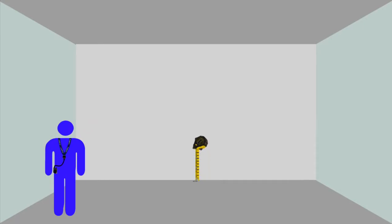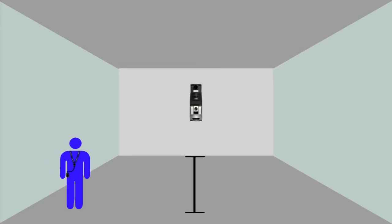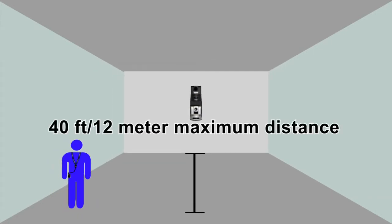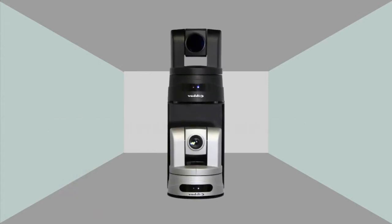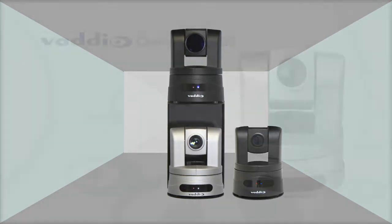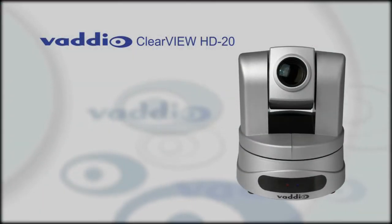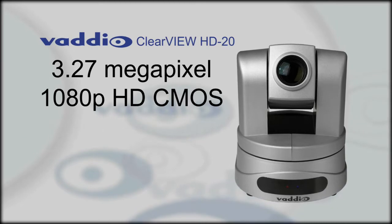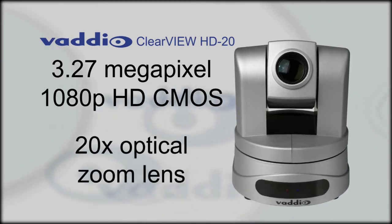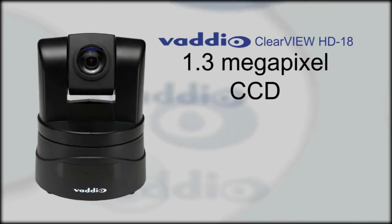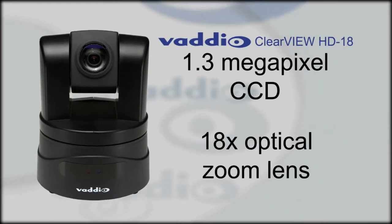Measure and note a location in the center back of the room for the tracking camera to be mounted. The maximum distance from the presenter to the tracking camera is 40 feet or 12 meters. With the AutoTrack 2.0 system, there are two camera options available: the Clearview HD20 or the Clearview HD18. The Clearview HD20 PTZ camera provides true native HD 1080p at 30 frames per second with 20x optical zoom and a single-chip CMOS image sensor. The Clearview HD18 PTZ camera provides an HD image with 18x optical zoom.